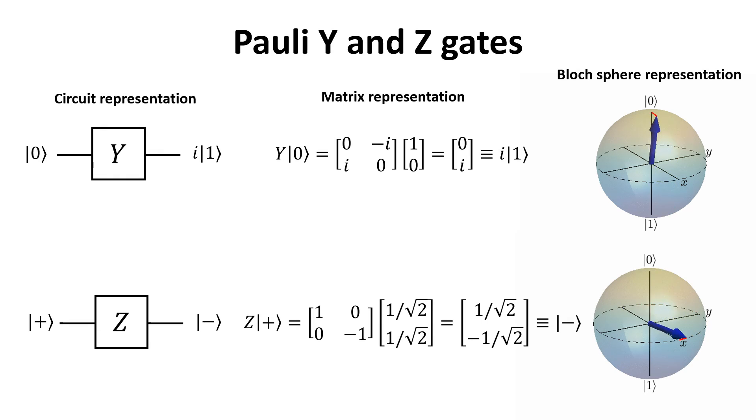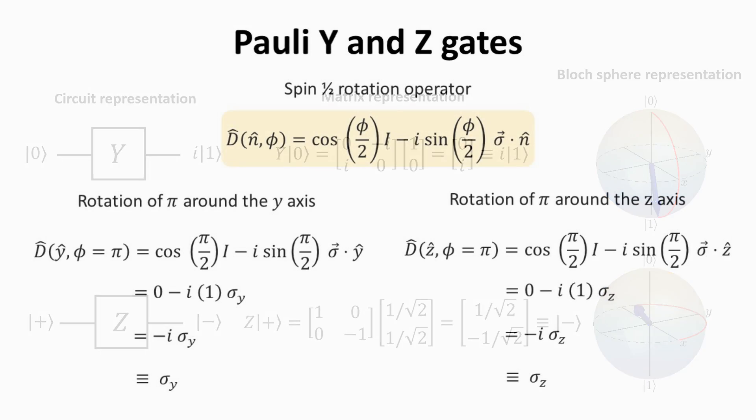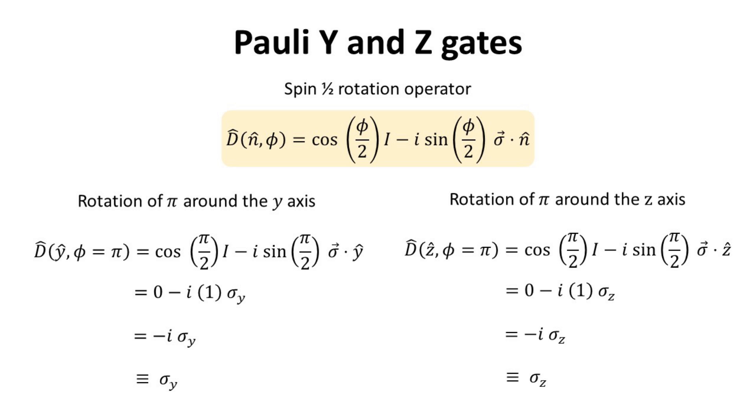The Z gate rotates the plus ket by pi with respect to the Z axis, ending up as the minus ket. Using the general definition of the spin one-half rotation matrices, one can also check that these rotations indeed correspond to the Pauli matrices sigma Y and Z. Feel free to pause if you would like to inspect the math.